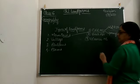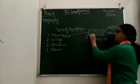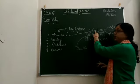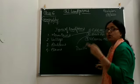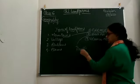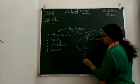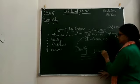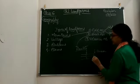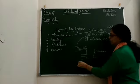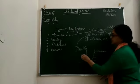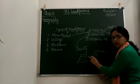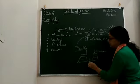Now, block mountains are the result of faulting on the rock strata. Faults are there, and because of these faults the rock strata get cracked. Due to tension from opposite sides, the rock strata lower their level over a period of time. This is the formation of a block mountain. The remaining part stays raised, while the pit gets depressed, forming a rift valley.